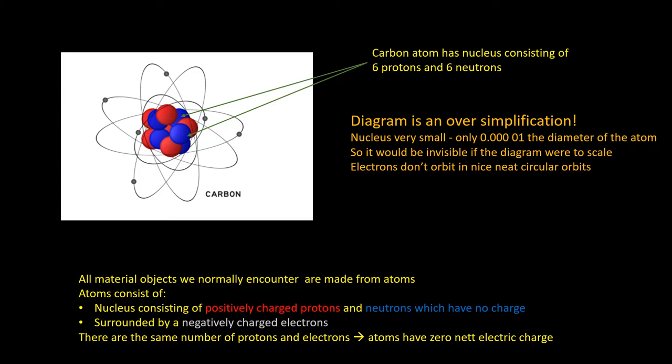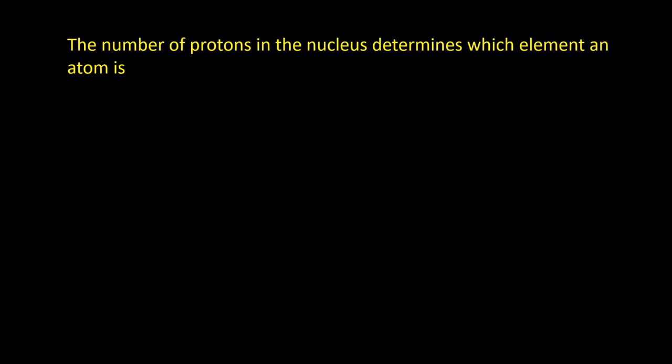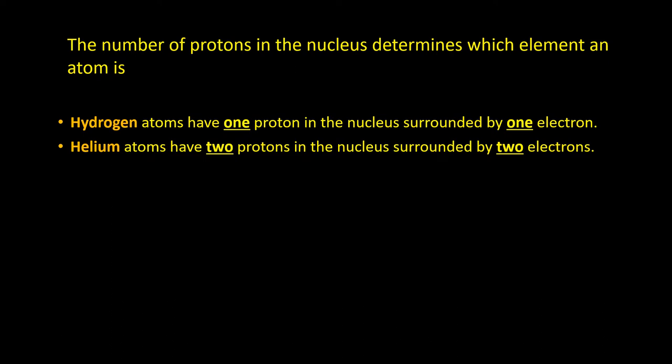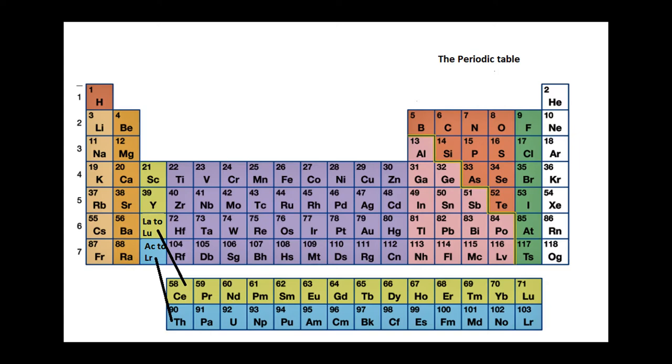The number of protons in the nucleus determines the type of atom it is. Atoms which have one proton are hydrogen atoms, atoms with two protons are helium, three protons lithium, four beryllium, and so on. The number of protons in the atomic nucleus is called the atomic number and determines the atom's position in the periodic table.